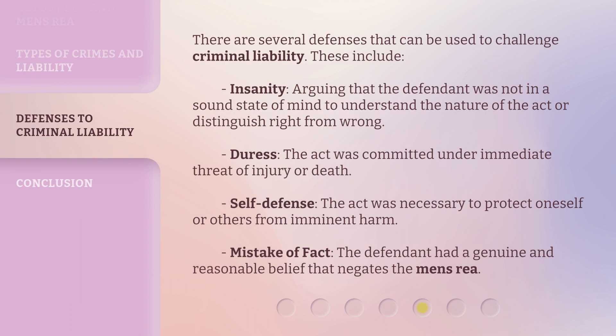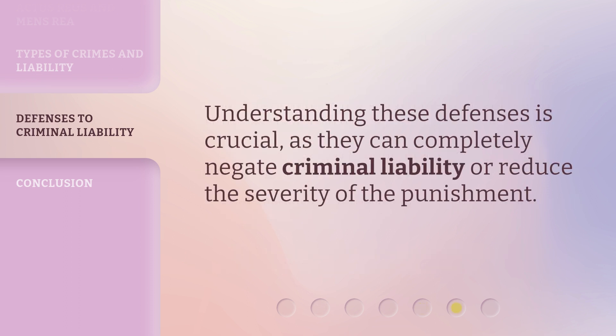There are several defenses that can be used to challenge criminal liability. These include: insanity — arguing that the defendant was not in a sound state of mind to understand the nature of the act or distinguish right from wrong; duress — the act was committed under immediate threat of injury or death; self-defense — the act was necessary to protect oneself or others from imminent harm; and mistake of fact — the defendant had a genuine and reasonable belief that negates the mens rea. Understanding these defenses is crucial, as they can completely negate criminal liability or reduce the severity of the punishment.